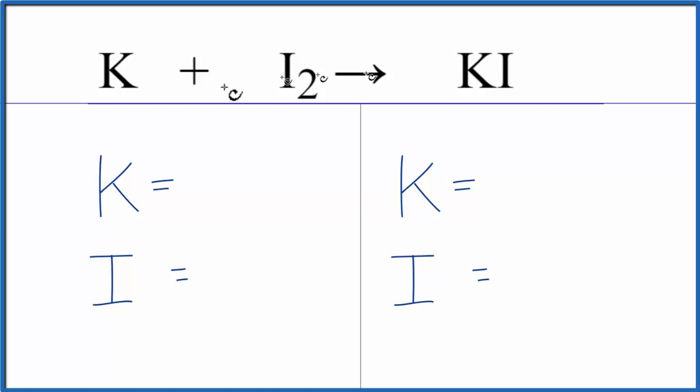So to balance the equation, let's count the atoms up on each side. For potassium, it's not written, but there's considered to be a 1 right here. So we have 1 potassium atom, 2 of the iodines, and then 1 potassium here and 1 iodine there.